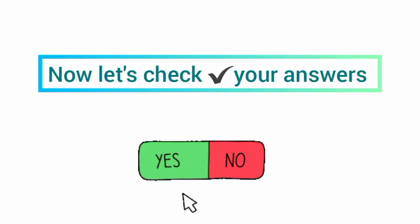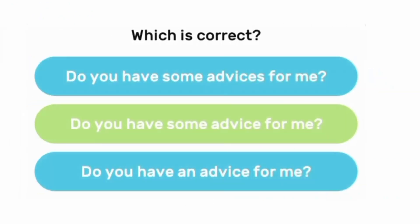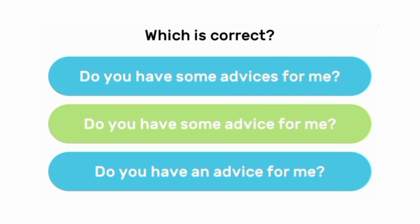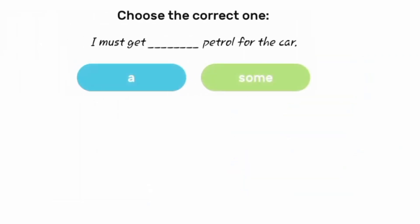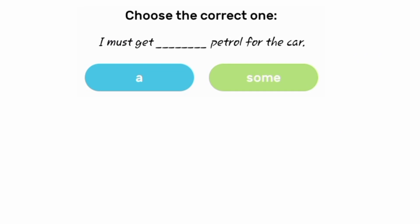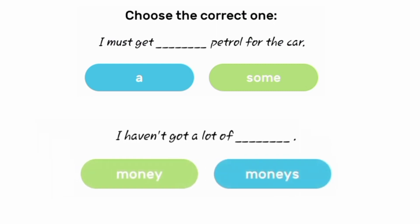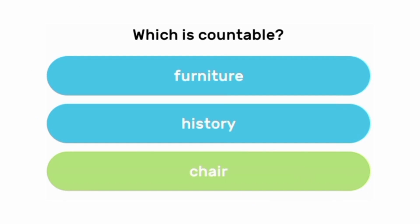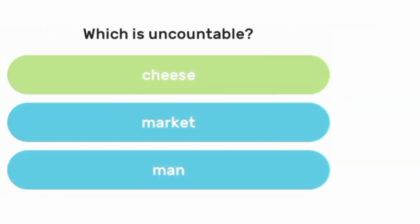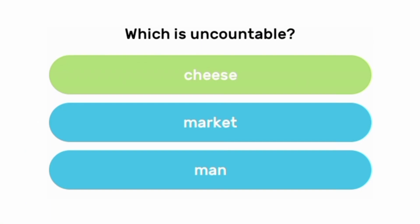Now let's check your answers. The correct sentence is: 'Do you have some advice for me?' 'I must get some petrol for the car.' 'I haven't got a lot of money.' The countable word is chair, and the uncountable word is cheese.